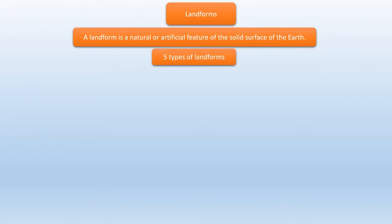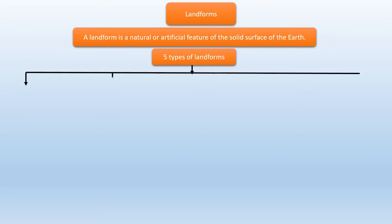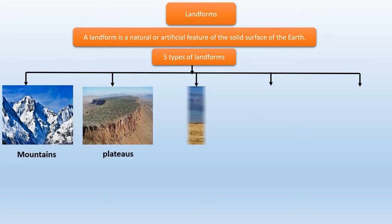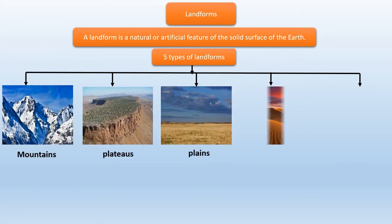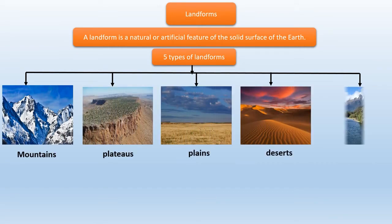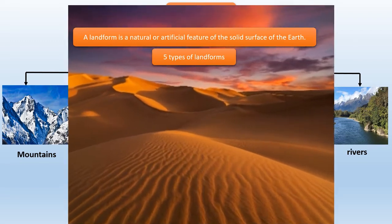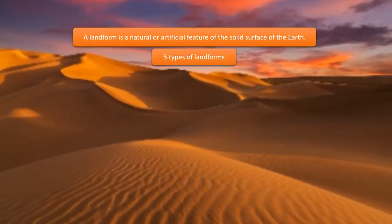What do you mean by landforms? A landform is a natural or artificial feature of the solid surface of the earth. There are mainly five types of landforms: mountains, plateaus, plains, deserts, and rivers. In today's class we will be learning about deserts.